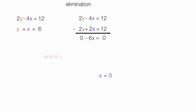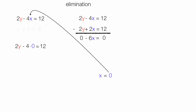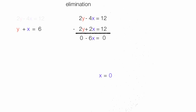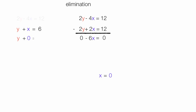You're probably wondering, but what is y? Let me show you what y is. I could put zero in the top equation, so it's two y minus four times zero is equal to twelve. But putting it in the bottom equation is a little easier. So if I put it in the bottom equation, I have y plus zero is equal to six, or y is equal to six.